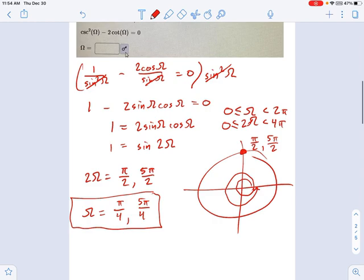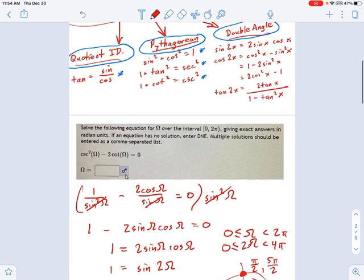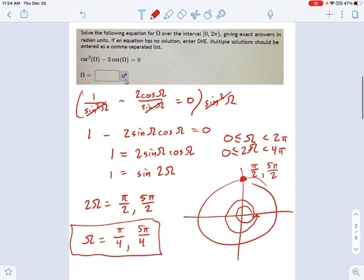You would have gotten the exact same thing if you had used the Pythagorean identity for cottage cheese up here at the beginning. This is just an alternate way to solve it. You don't always have a choice. Sometimes you will be kind of forced into using a double angle identity. This is just showing you when it's optional.